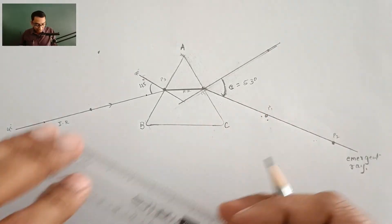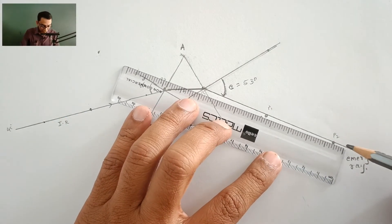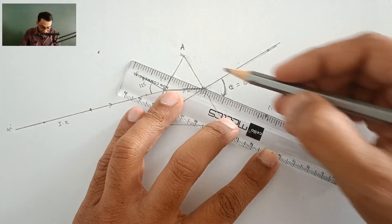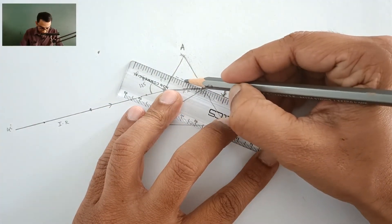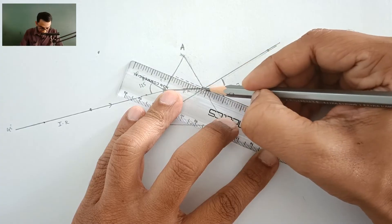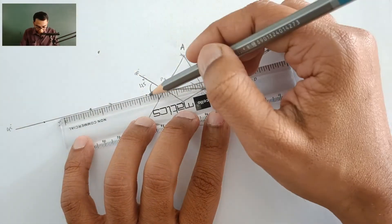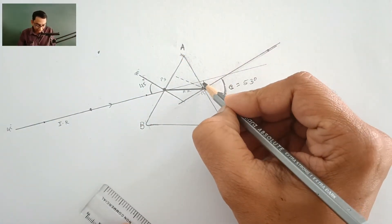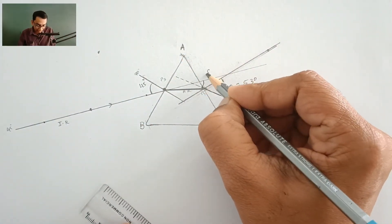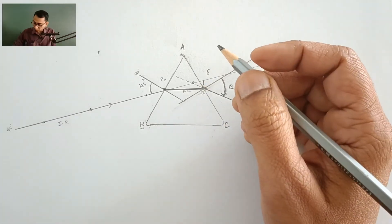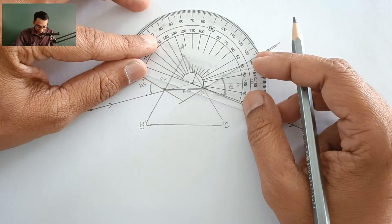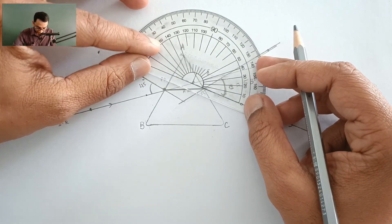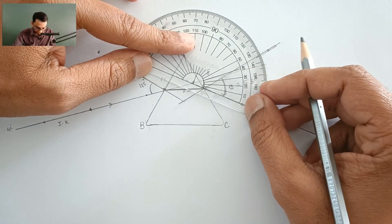Now how would we find out the angle of deviation? You need to extend this emergent ray backwards with a dotted line like this and extend the incident ray forward like this. Then the angle which is formed, this angle is the angle of deviation. So we are going to put the protractor back at its place and then we are going to measure the angle of deviation.